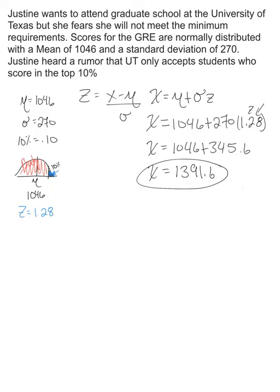I found that Z by looking at 10% and converting it to 0.10, since 10% as a percentage is 0.10 as a decimal. I know she wants to be in the top 10%, so I used Z = 1.28 because that corresponds to a tail proportion of 0.10.